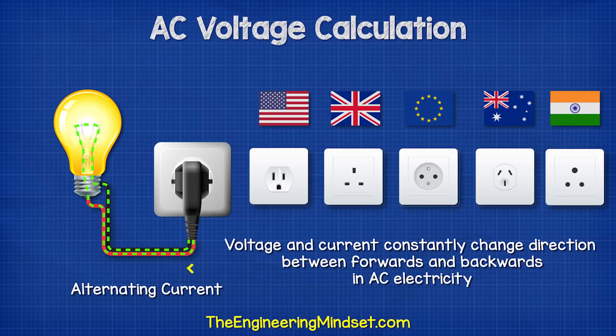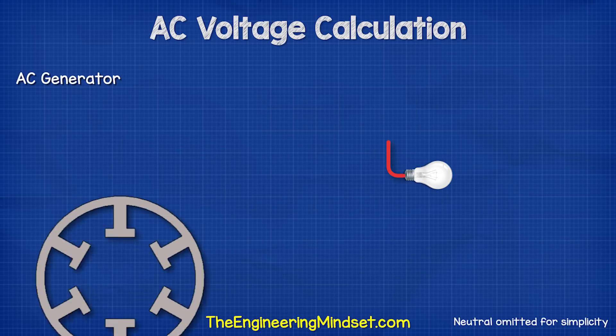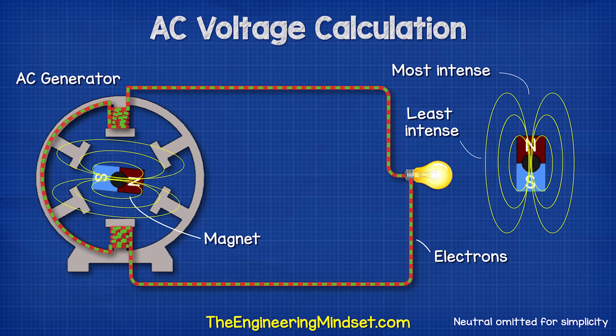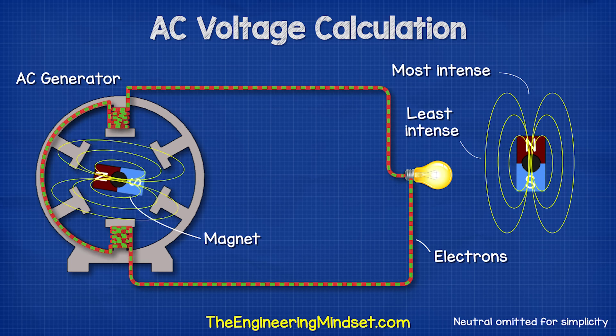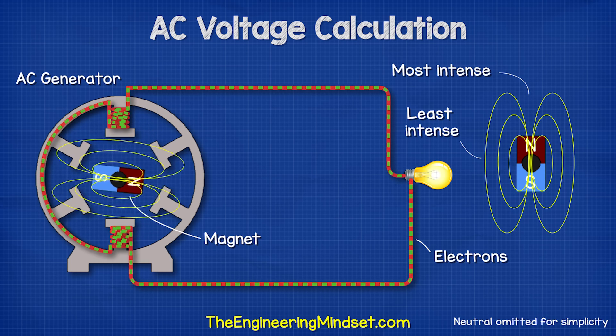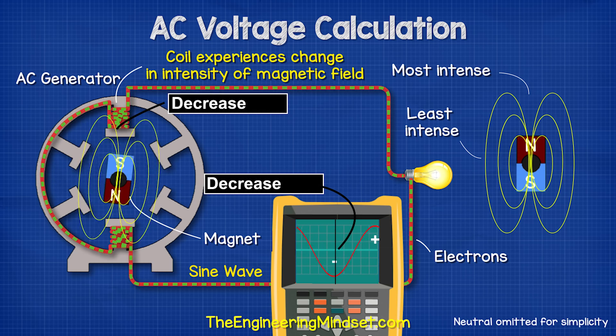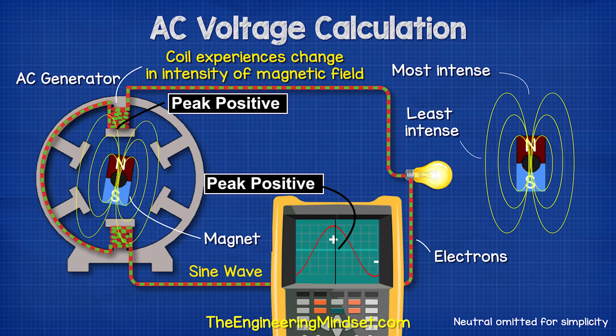In AC electricity, the voltage and current constantly change direction between forwards and backwards. That's because there's a magnetic field in the AC generator which essentially pushes and pulls electrons in the wires. This is therefore changing between positive and negative values as it flows forwards and backwards.